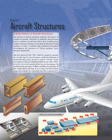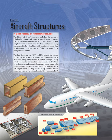Chapter 1: Aircraft Structures. The history of aircraft structures underlies the history of aviation in general. Advances in materials and processes used to construct aircraft have led to their evolution from simple wood truss structures to the sleek aerodynamic flying machines of today. Combined with continuous power plant development, the structures of flying machines have changed significantly. The key discovery that lift could be created by passing air over the top of a curved surface set the development of fixed and rotary wing aircraft in motion.